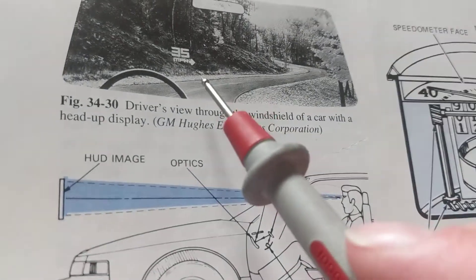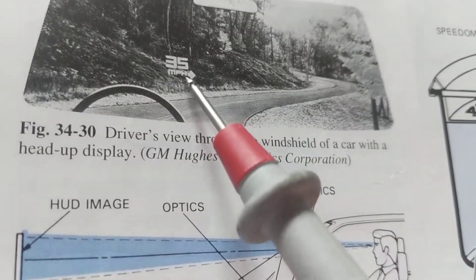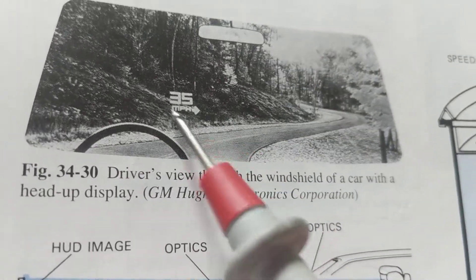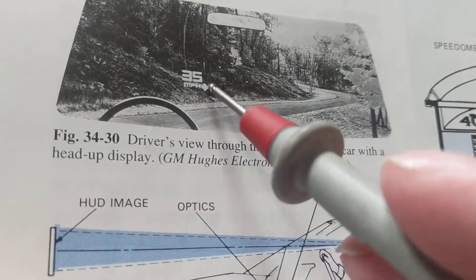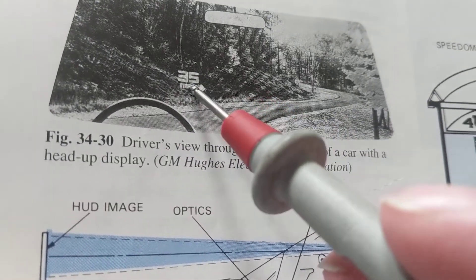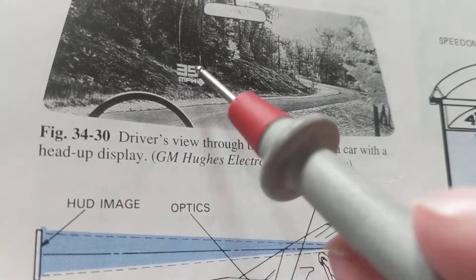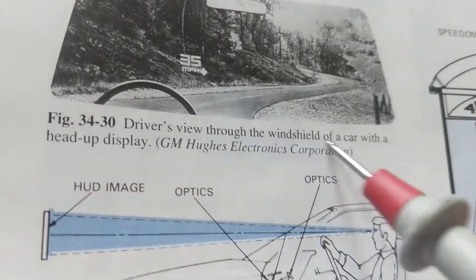35 miles per hour, if you can see this. He sees this. His peripheral vision, his vision is directed through the windshield, not here.